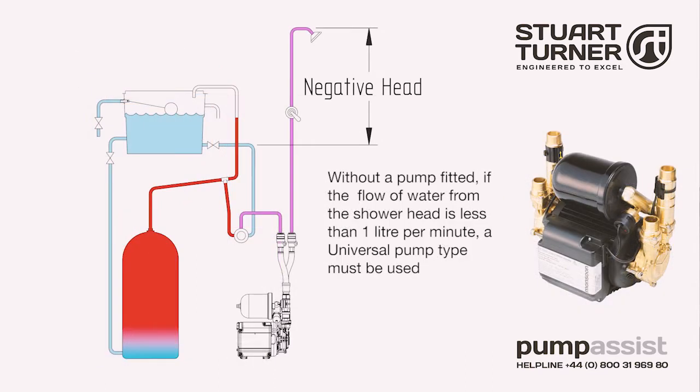In this situation the universal pump must be used. In addition to the flow switch, the universal pump also includes a pressure switch, and when an outlet is opened the pump is activated by the pressure switch and it continues to run using the flow switch until an outlet is closed.